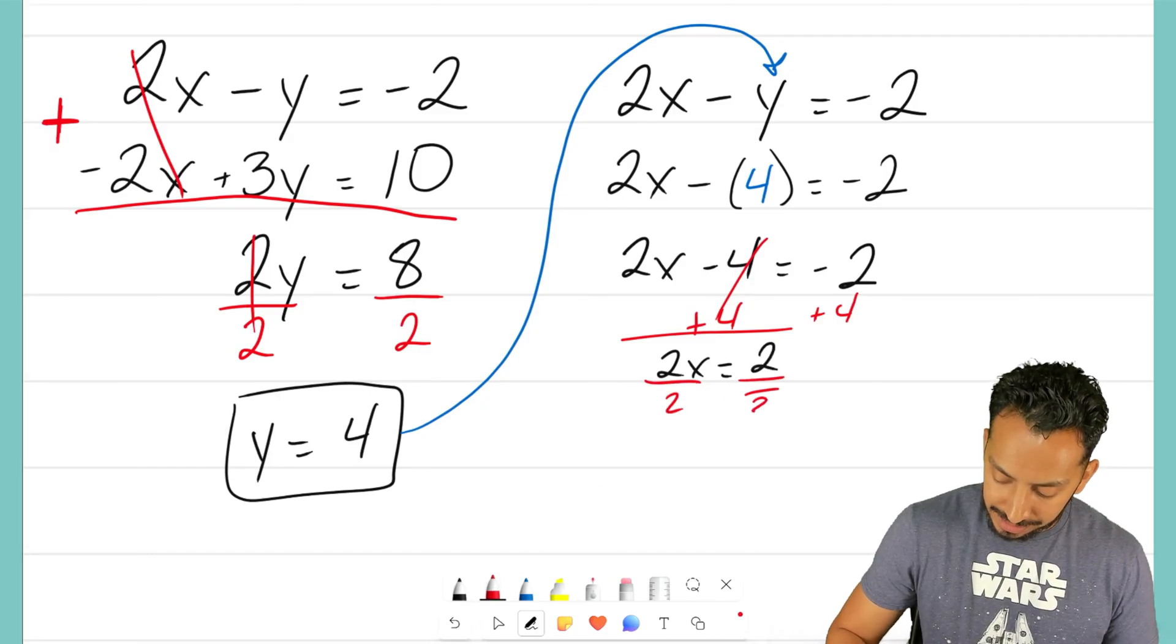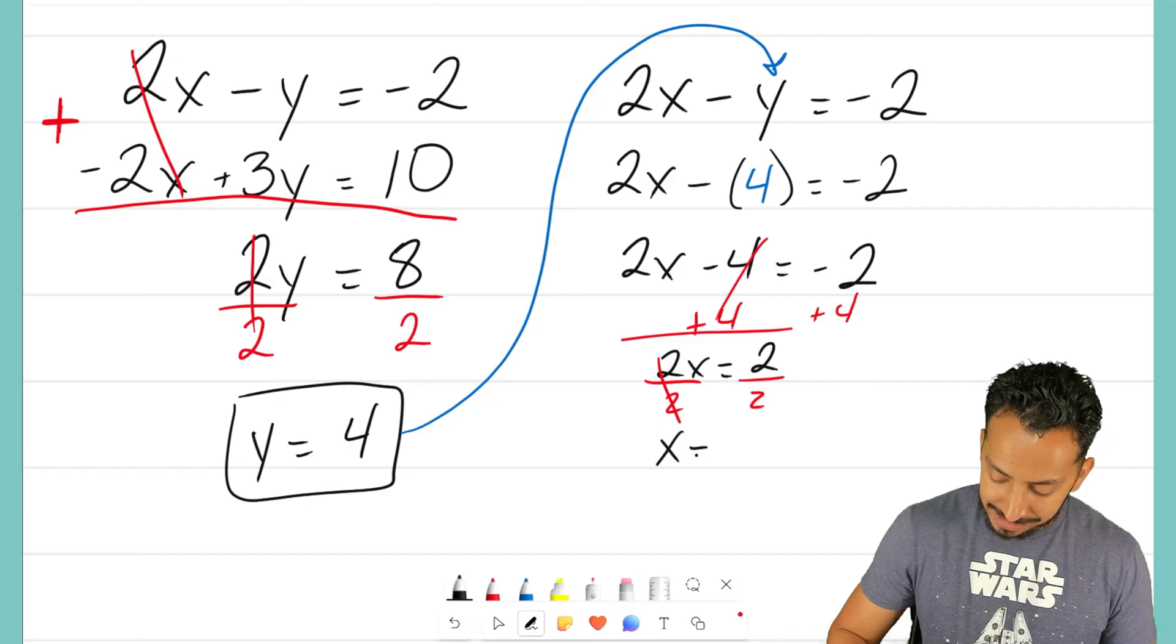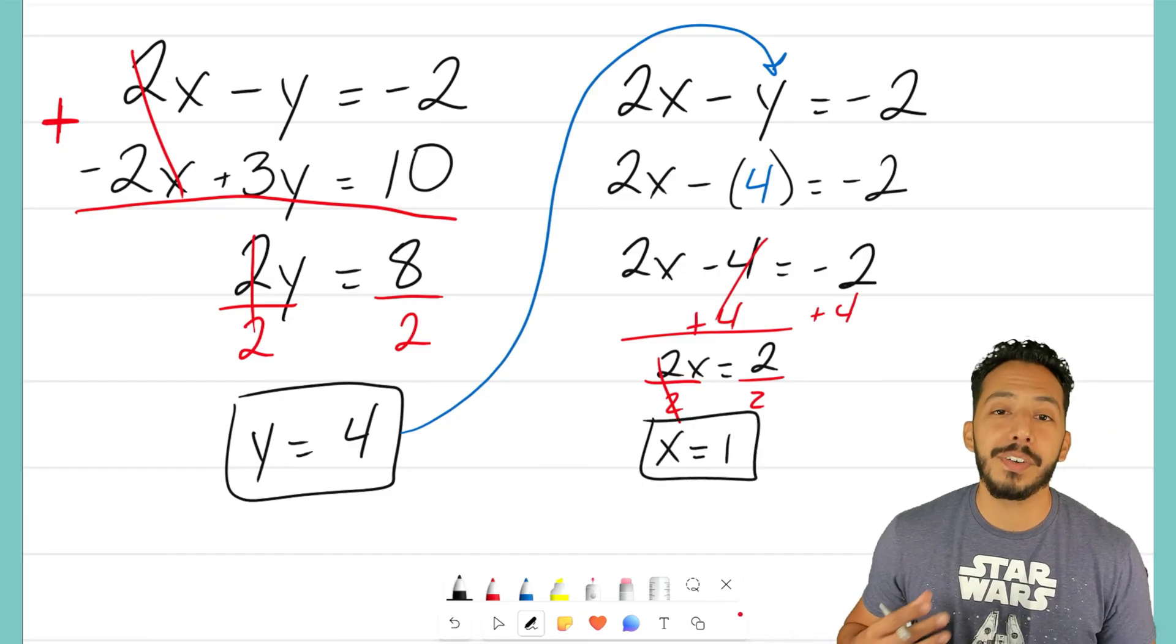Last step is to divide both sides by, whoops, I did a double fraction there. Divide both sides by that positive 2, our coefficient, and we end up with x equaling positive 1.